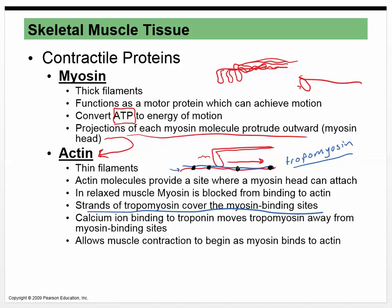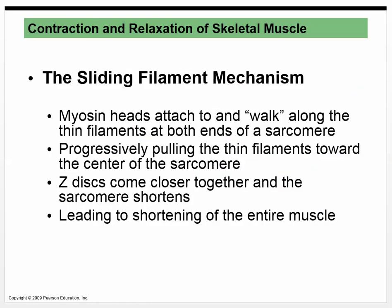What's holding the tropomyosin there are these little protein molecules called troponin. The troponin is actually what's holding the tropomyosin in place. The myosin head is trying to get to the actin, but the tropomyosin protein is in the way. Troponin is the one that calcium binds — so when calcium binds to the troponin, it will move that tropomyosin out of the way. And then as long as you have ATP present, that myosin molecule will just pull on the actin and the whole thing will shorten.